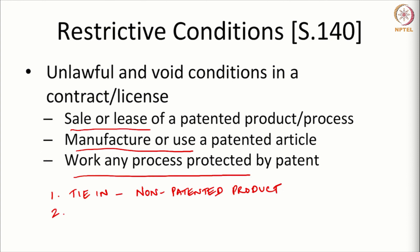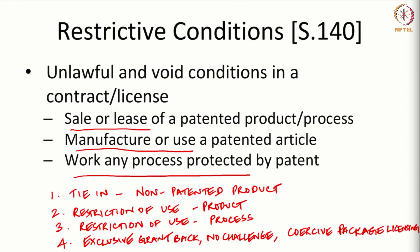The second is restriction of use of a product, where the terms restrain a person from using certain products. The third is restriction of use pertaining to processes other than the patented process — there is a restriction on a non-patented process which a person cannot make or use.